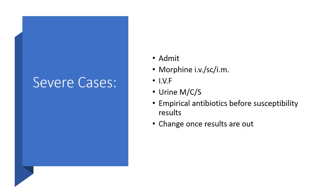In severe cases, admit the patient. Give morphine intravenously, subcutaneously, or intramuscularly. Give IV fluids, urine microscopy, and culture and sensitivity testing. You can commence empirical antibiotics before susceptibility results are released, then change to the definitive or appropriate antibiotics once the results are out.